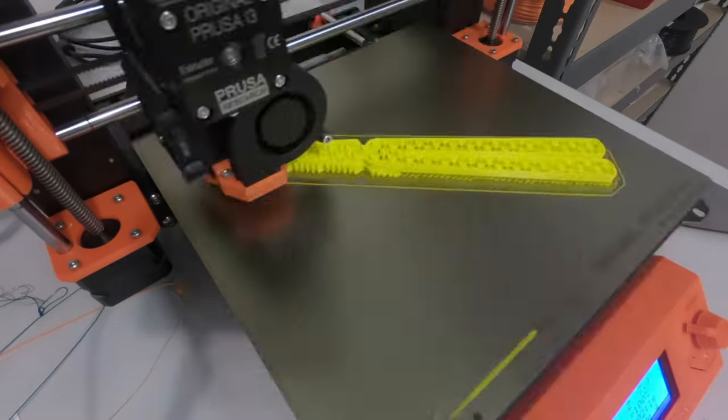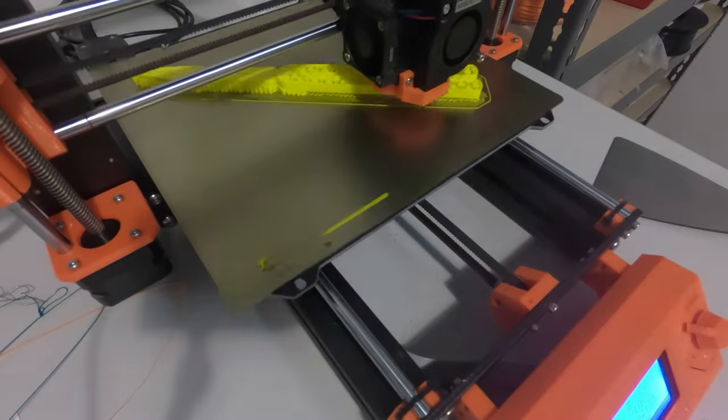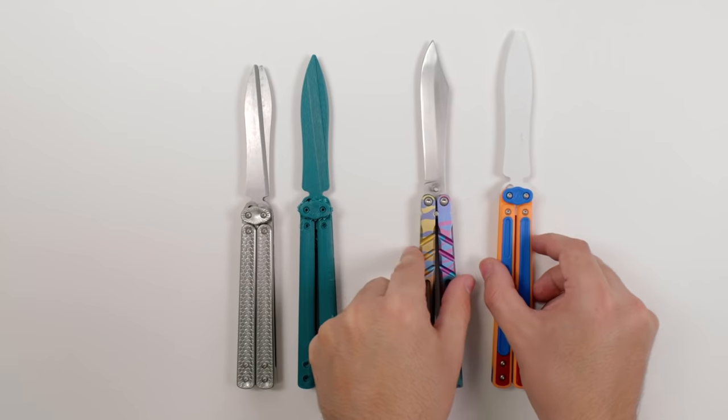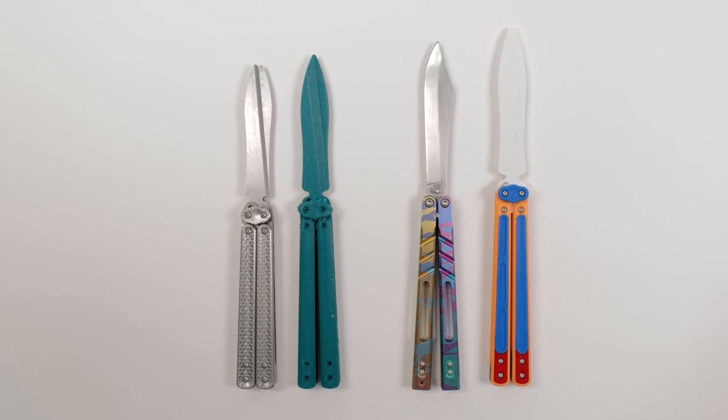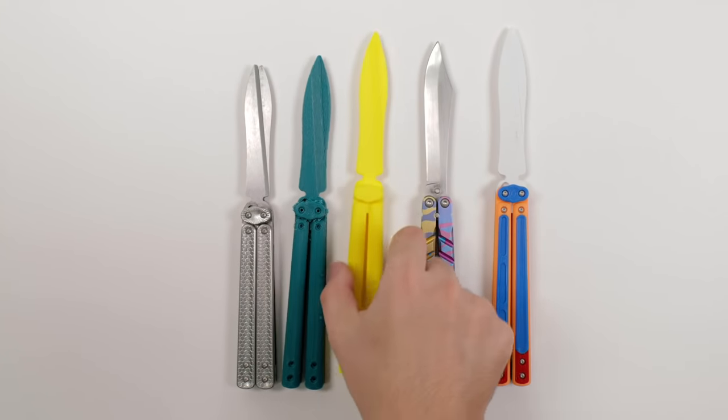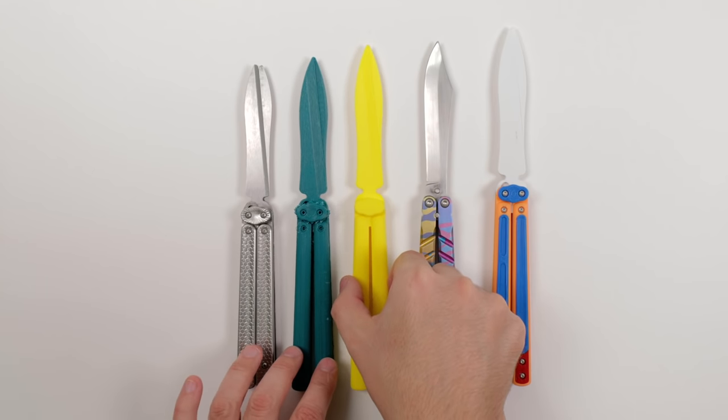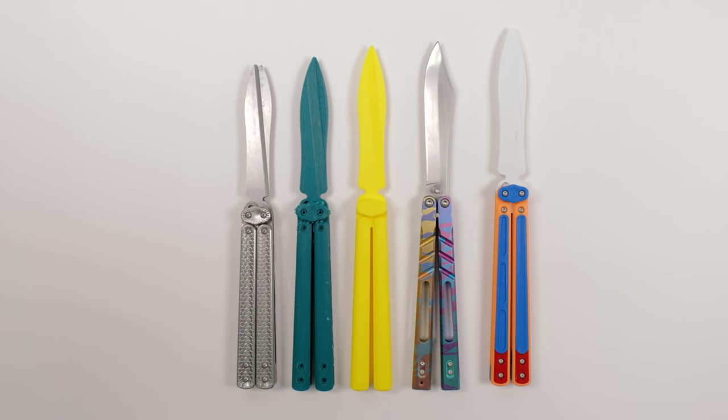I printed another model, this time with even more simplified geometry, so the print support structure wouldn't be annoying. I think I like this size. It's still a little shorter than the Alpha Beast, but not by much.